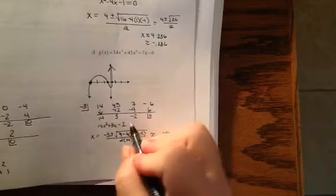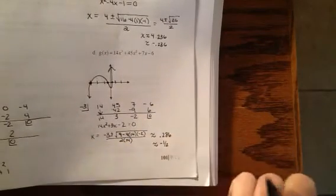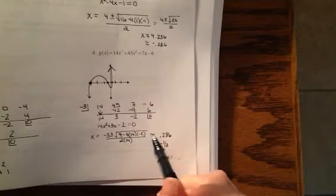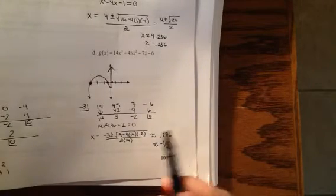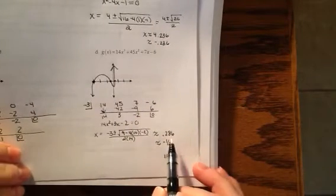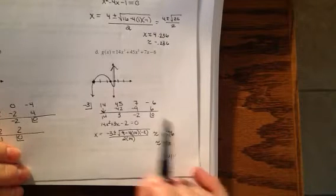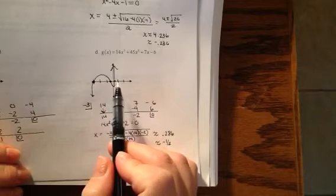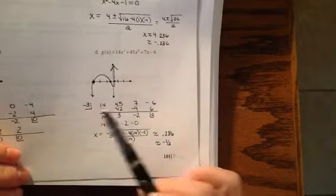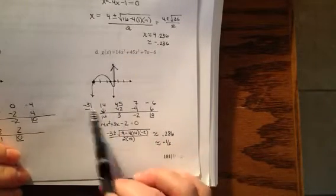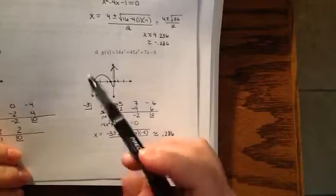Then I'm left with this quadratic which equals 0, and that quadratic doesn't look very fun to factor to me. When I did the quadratic formula, I get answers of 0.286 is a zero and negative 1/2 is a zero. This is a degree of 3. There's 3 zeros, each one has a multiplicity of 1, so you go straight through all of them, and there's my rough sketch.